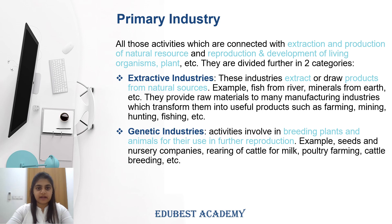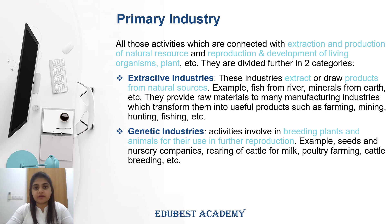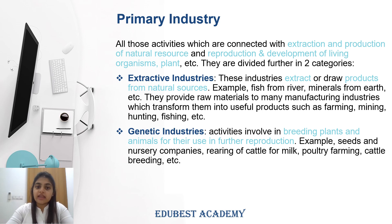The first part of industry is primary industry. Primary industry is formed from two things: natural resources and living organisms or plants. The extraction or production of natural resources, and the reproduction and development of plants and animals — these four activities together form primary industry activities. Primary industry is divided into two parts: extractive industry and genetic industry. Extractive industries deal with natural resources, and genetic industries deal with plants and animals.